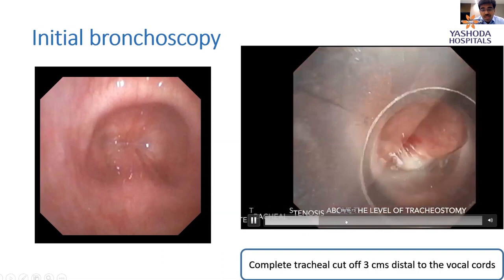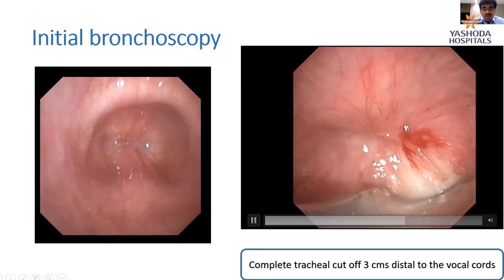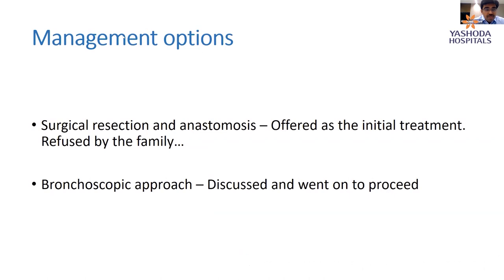We discussed with the patient what had to be done. Surgical resection was one option — if successful, it would be a lifetime cure. However, the family refused on two grounds: she had already spent one and a half months in hospital and they didn't want more surgery, and also for financial reasons. We had two options: leave her on tracheostomy or try a bronchoscopic approach. Because she was already depressed with suicidal intent and very upset about not being able to talk, we chose the bronchoscopic approach.